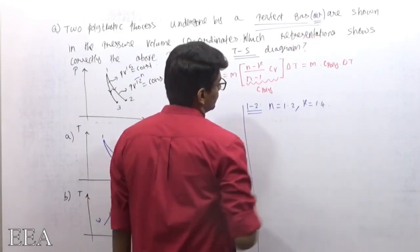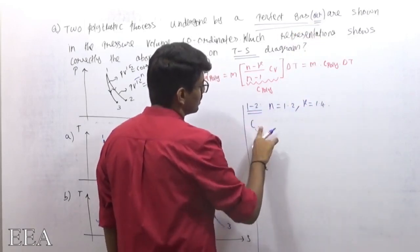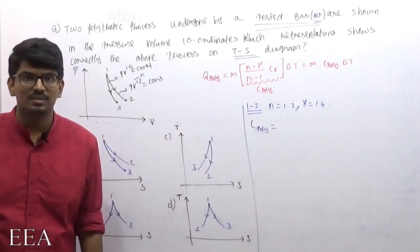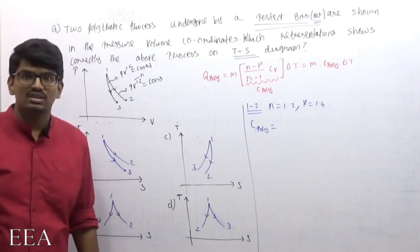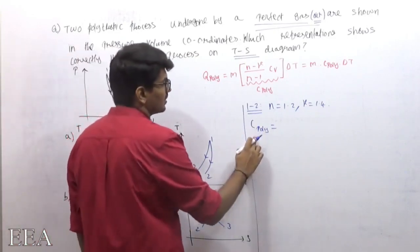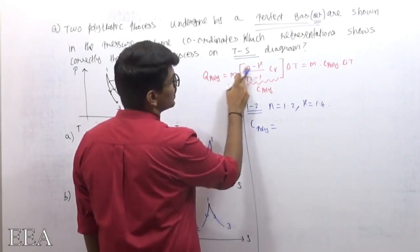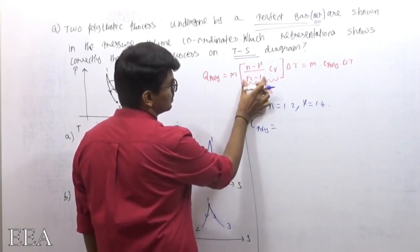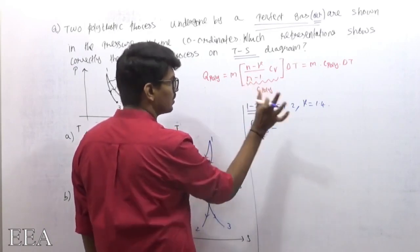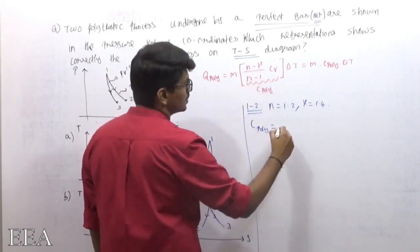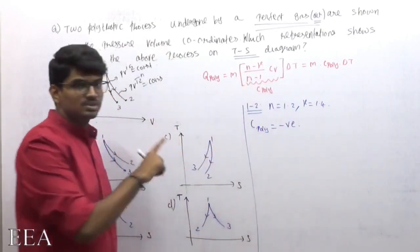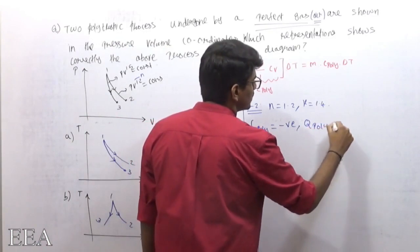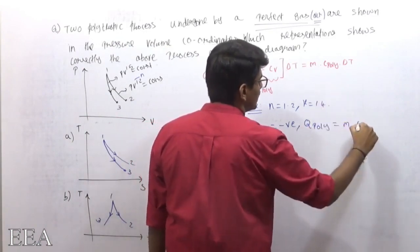n = 1.2 and for air, gamma = 1.4. Now, c_poly = c_v × (n − gamma) / (n − 1). Since n = 1.2 and gamma = 1.4, the term (n − gamma) becomes negative, so c_poly — the polytropic specific heat — is negative.